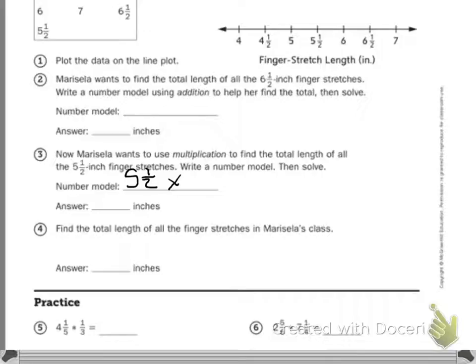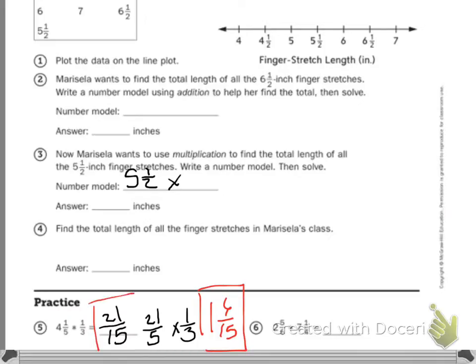Practice 5 is 4⅕ times ⅓, and then 6 is 2⅚ times 7¼. You can turn these into improper fractions. So 5 times 4 is 20 plus 1 is 21 fifths times ⅓. So then you have 21 over 15, and you can reduce that to 15 goes into 21 one time. 21 minus 15 is 6. So I will accept this or this.